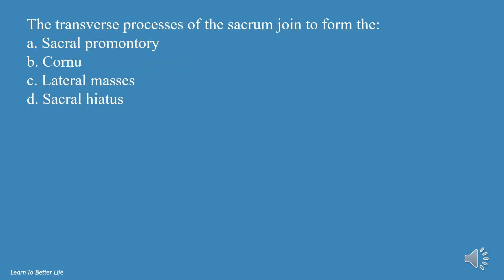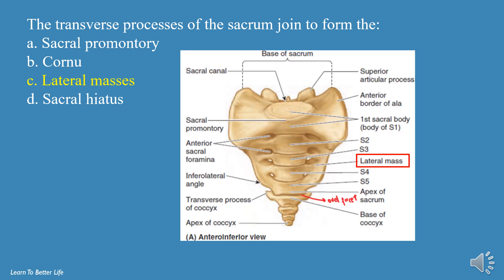The transverse processes of the sacrum join to form the: a. Sacral Promontory, b. Cornu, c. Lateral Masses, d. Sacral Hiatus. The answer is c, Lateral Masses.